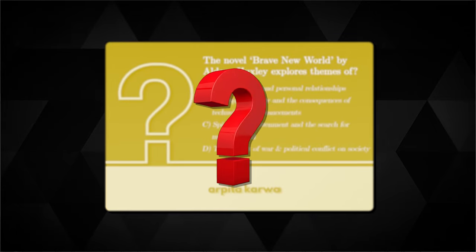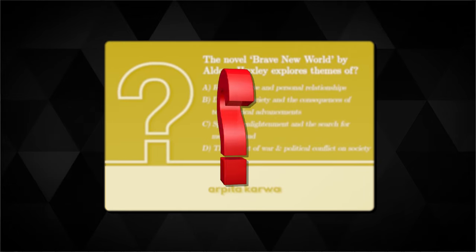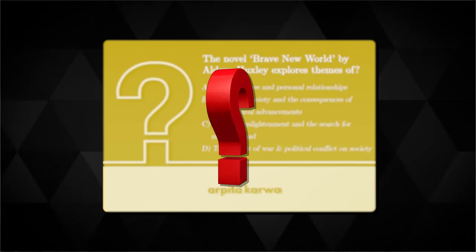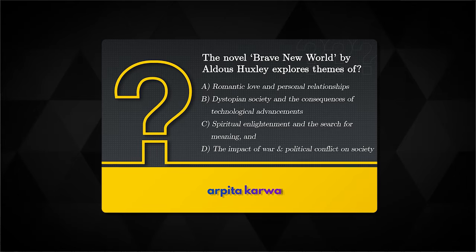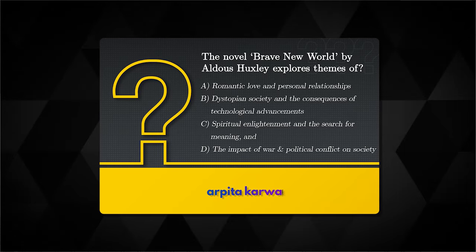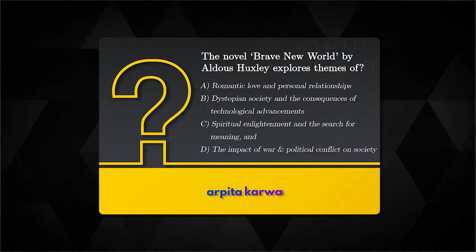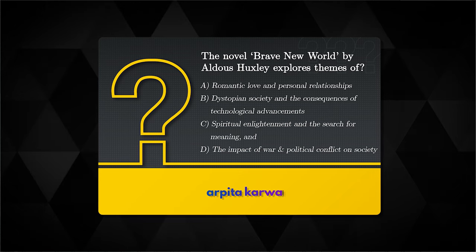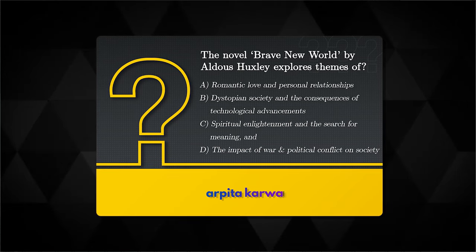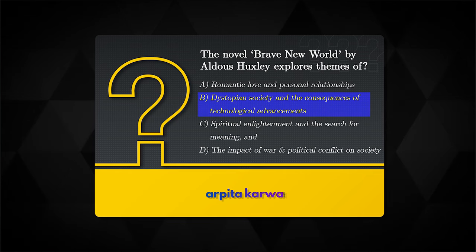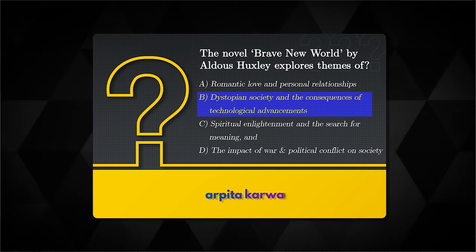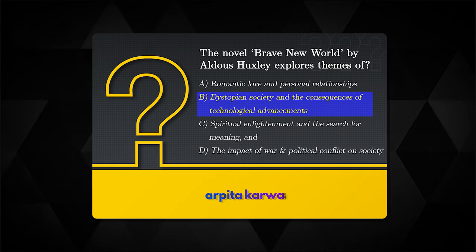Now it's question time. Here is a question from a previous year's paper: 'The novel Brave New World by Aldous Huxley explores themes of...' and the correct answer is option B — dystopian society and the consequences of technological advancements.